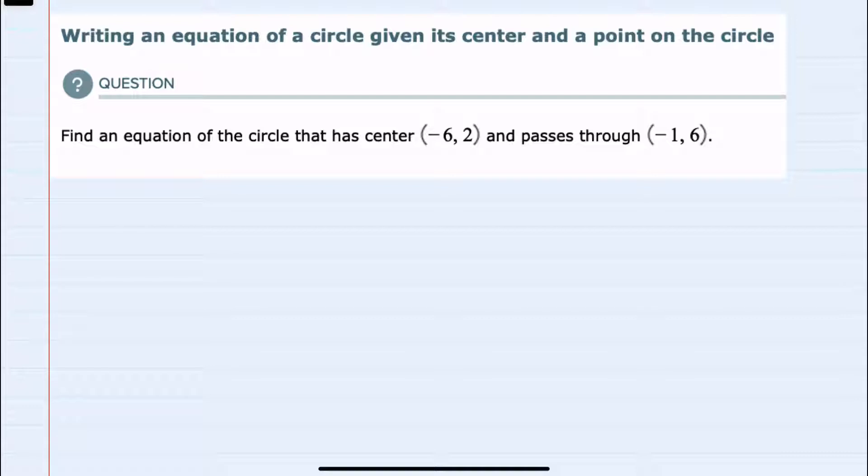So here we're given the center (-6, 2) and told that the circle passes through the point (-1, 6).